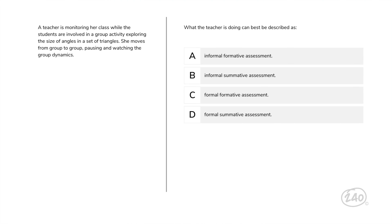Just one more — you've got this. All we have left is domain six, mathematical learning, instruction and assessment. A teacher is monitoring her class while the students are involved in a group activity, exploring the size of angles in a set of triangles. She moves from group to group, pausing and watching the group dynamics. What the teacher is doing can best be described as what? The teacher is listening and watching as she informally assesses student understanding of the concept of angle measures and triangles. That means the correct answer is A.